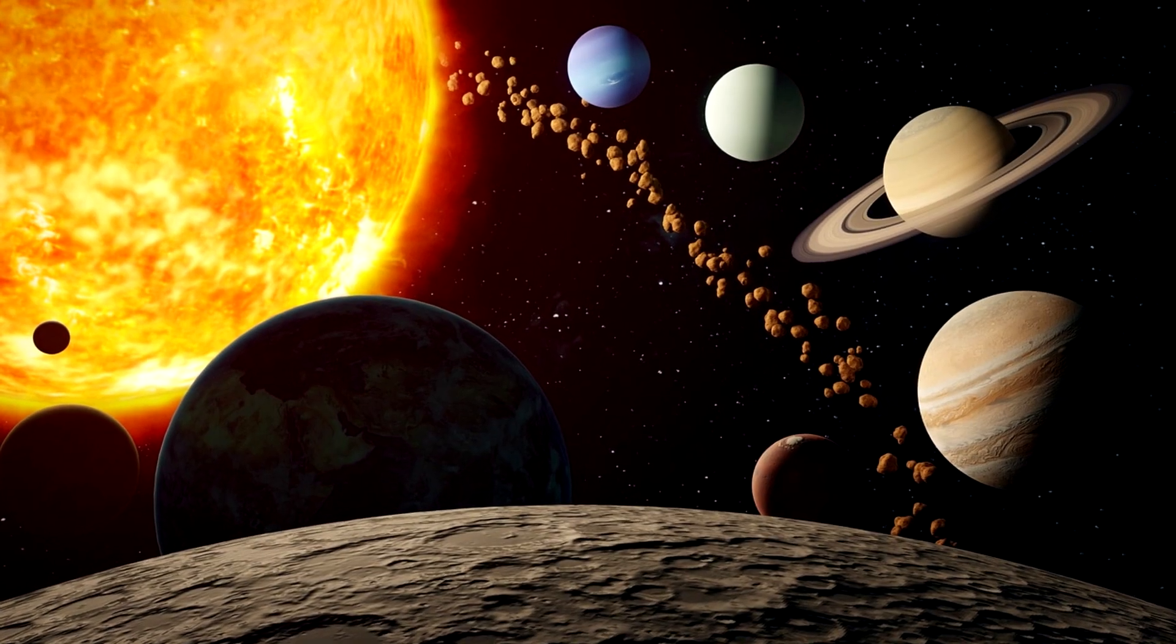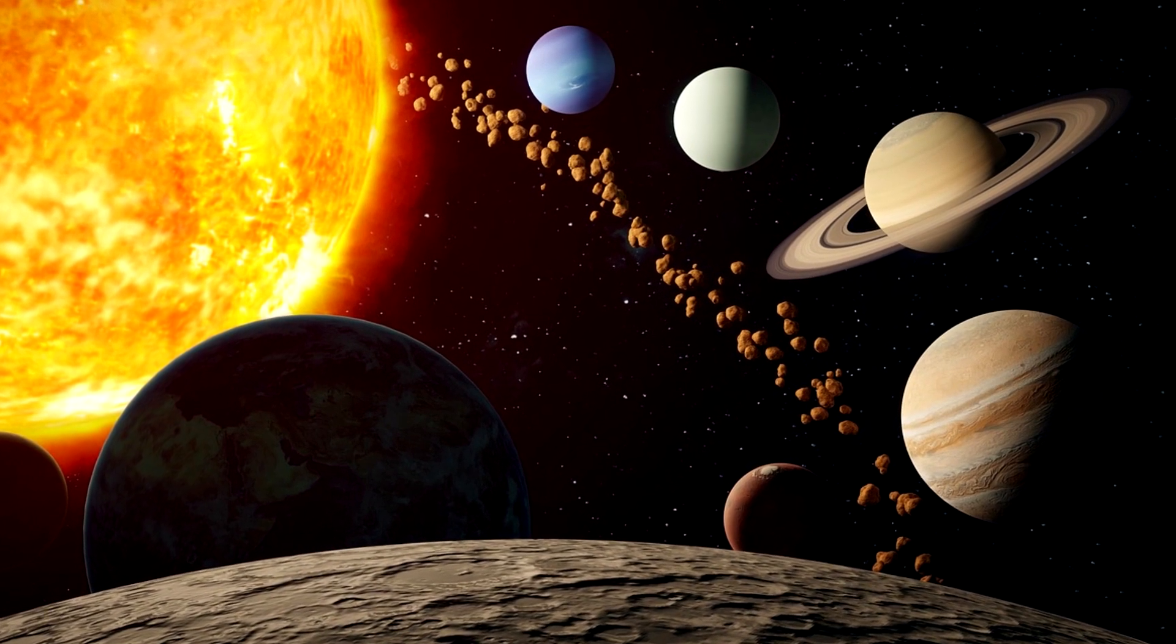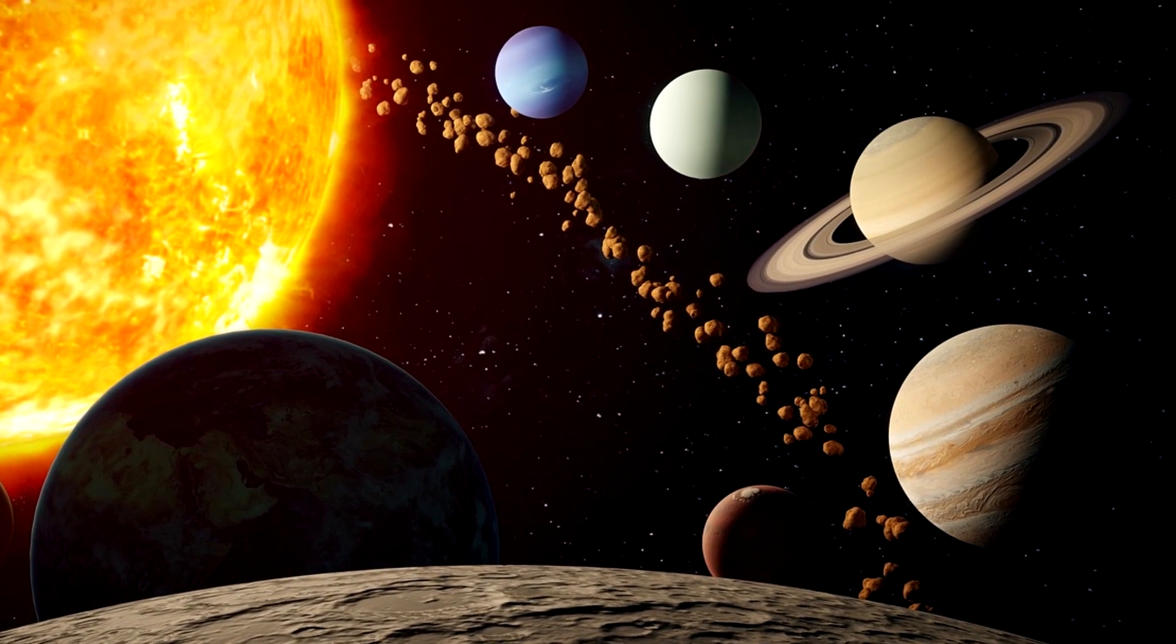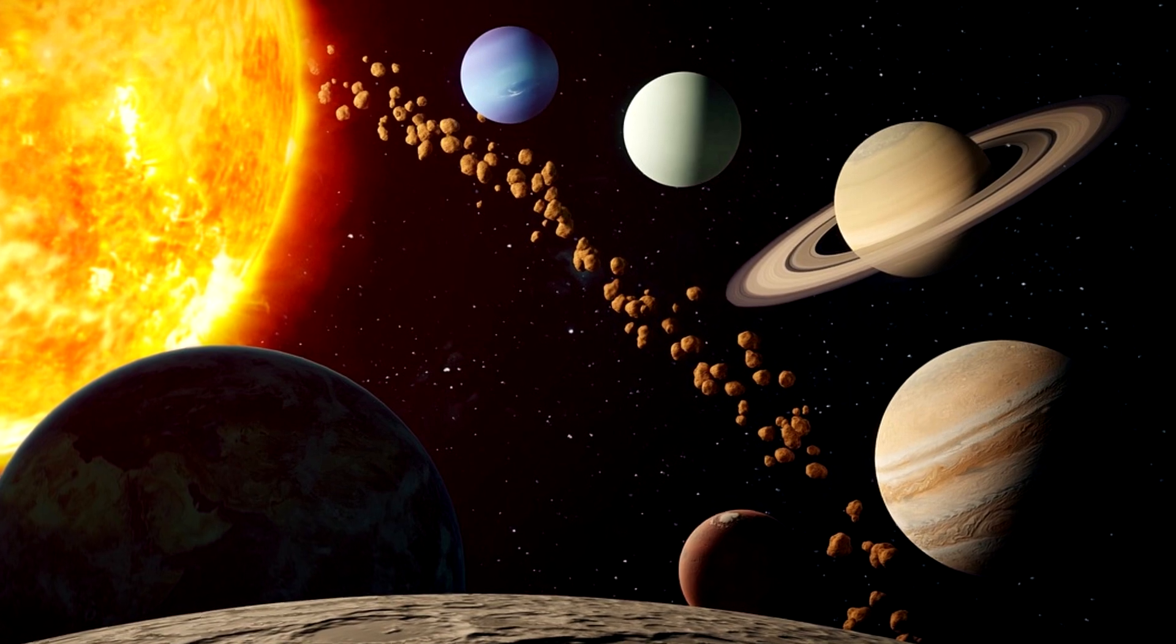The asteroid belt however is most obviously not the edge of our solar system, as beyond it we find the planets Jupiter, Saturn, Uranus and Neptune.